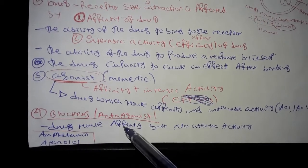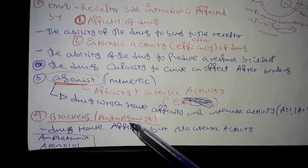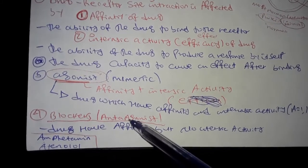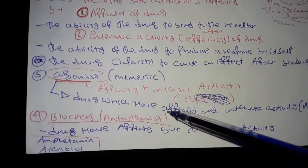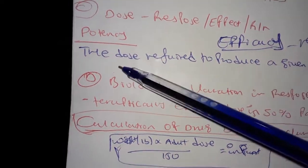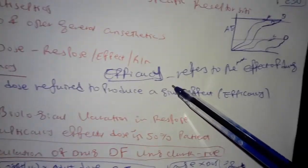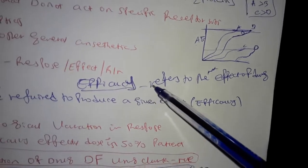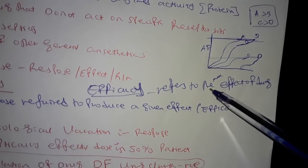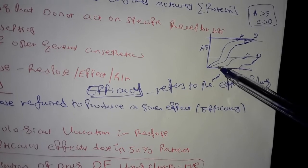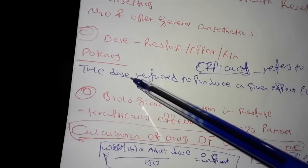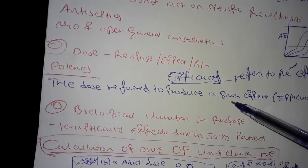Antagonists block the drug at the receptor. The efficacy of the drug refers to the maximum effect of the drug, which is the potential to produce a given effect at a certain concentration.